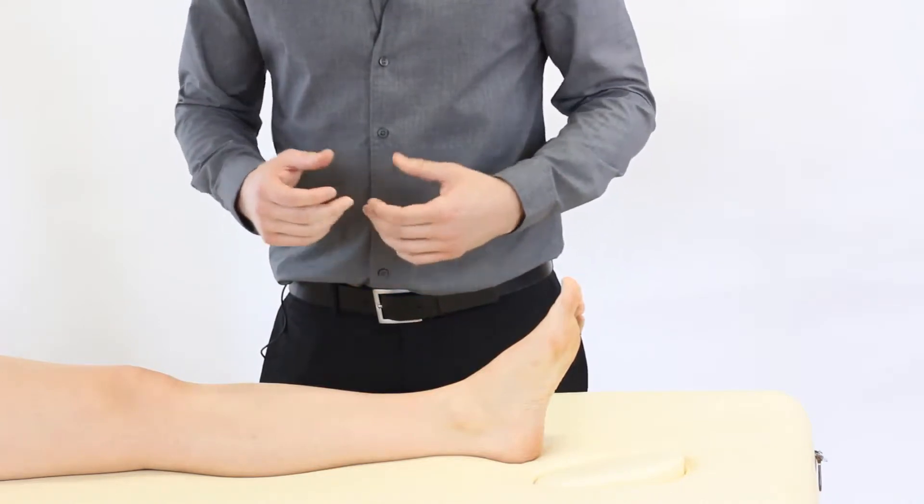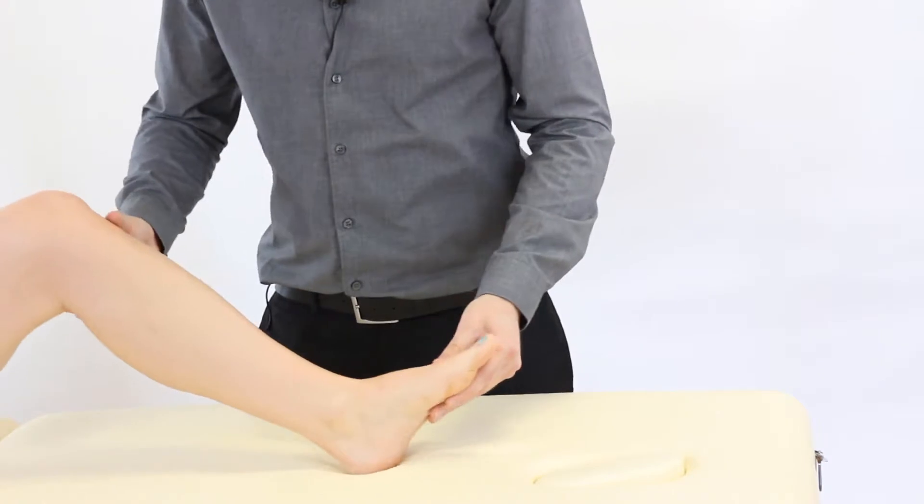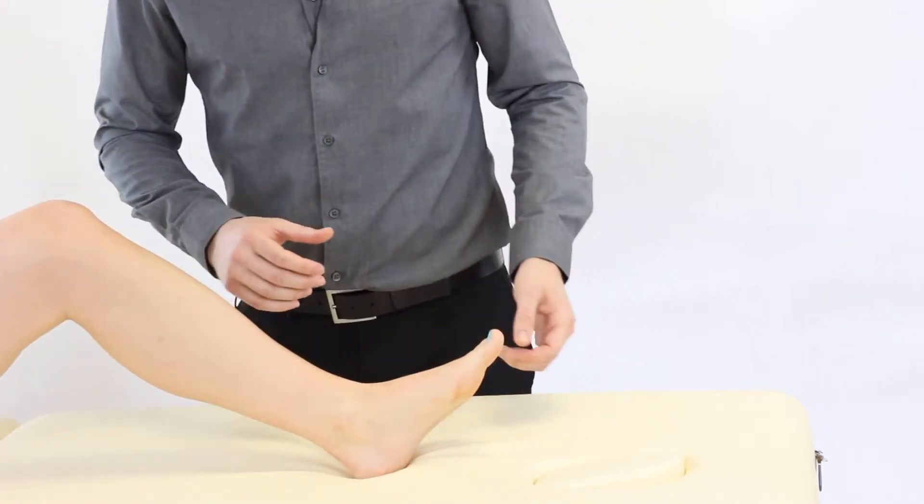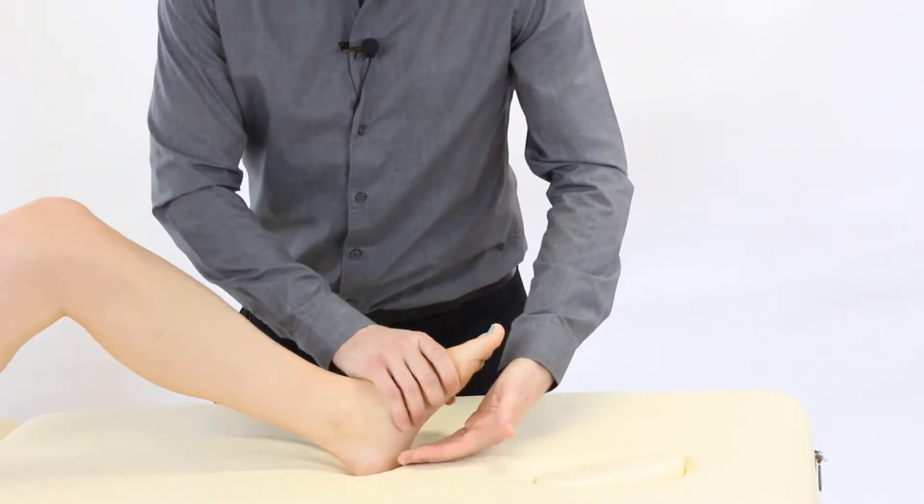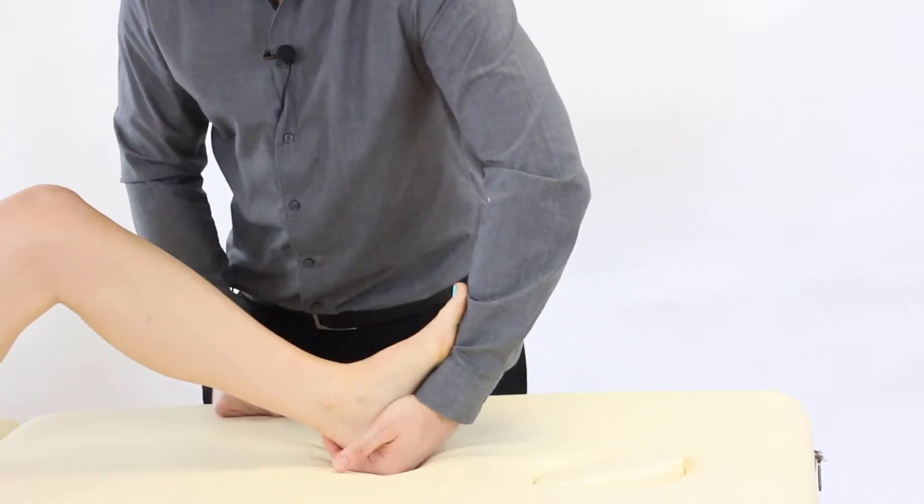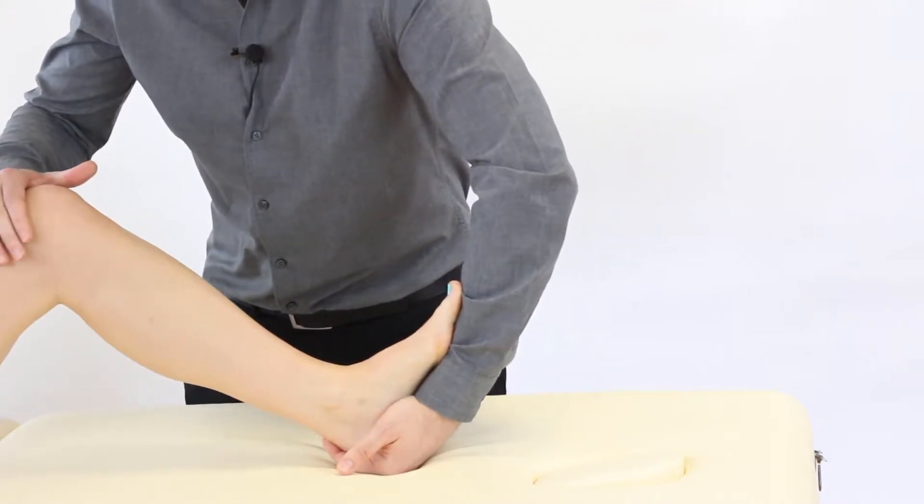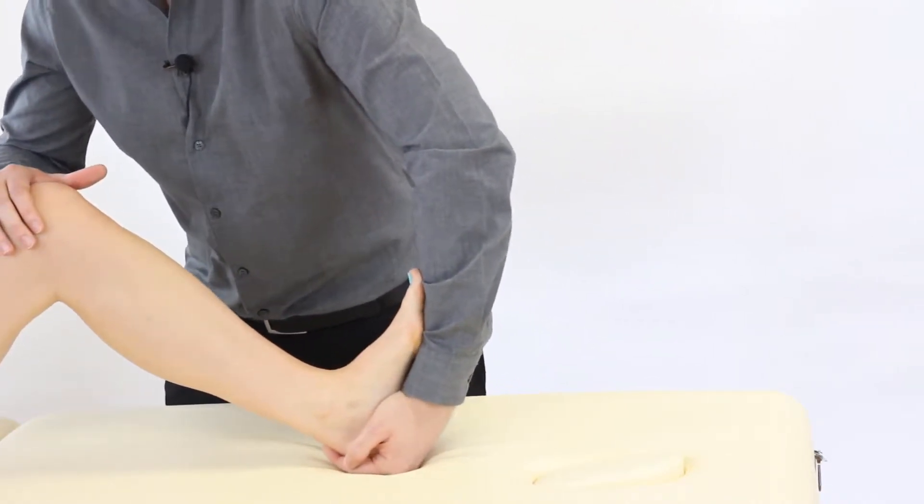From here we can also do a similar passive range of motion but with the knee in flexion. The process is very similar. We're still going to cup the calcaneus and have the forearm supporting the plantar aspect. It's just this time we're going to put our hands on the top of the knee and perform the same action.